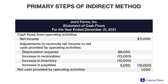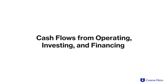Similarly, if the company had an increase in accounts receivable during the year of $13,000, this would mean that $13,000 of sales revenue was not for cash, and therefore the net income figure overstates cash by $13,000. In that case, we will subtract $13,000 from the net income to arrive at cash flows from operating activities.